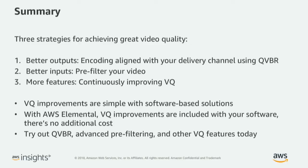Those are three strategies to achieve great video quality. One: better outputs, which primarily means matching the encoding to your channel — for OTT, that means looking at QVBR encoding. Two: making sure you're taking full advantage of all the pre-filtering available in your encoder. And three: making sure your encoding platforms can deliver consistent month-after-month improvement in video quality and features. Thank you very much for your time. Please check out the other sessions in the online conference, and if you have questions, visit the Ask an Architect area to get your question logged and we'll get back to you.